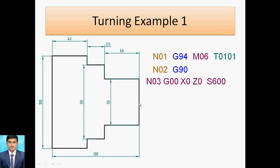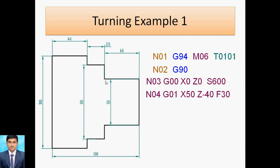Now the tool approaches this point. N04 is the sequence number; G01 is linear interpolation, so the tool moves from this point to this point. X is 50 — using the diameter approach — and Z is minus 40. F30 is the feed rate, mentioned when the workpiece is in contact with the tool.